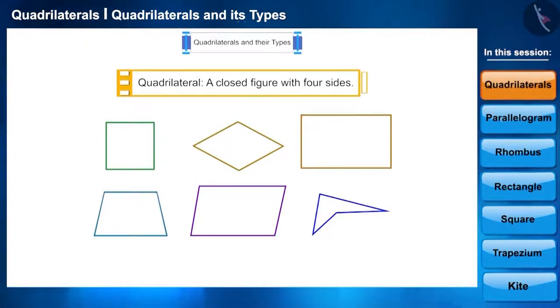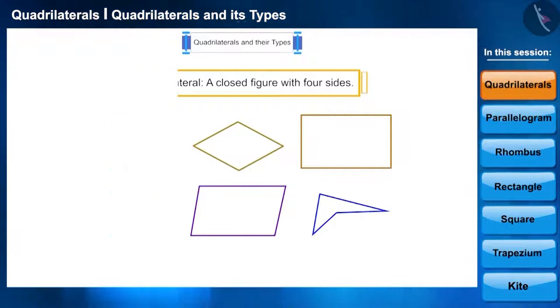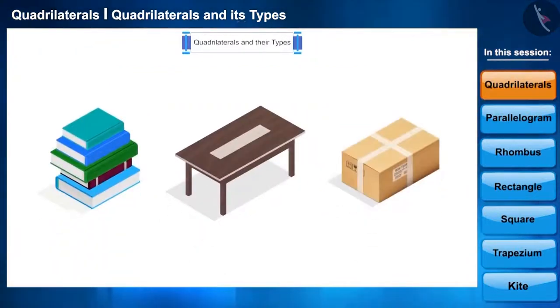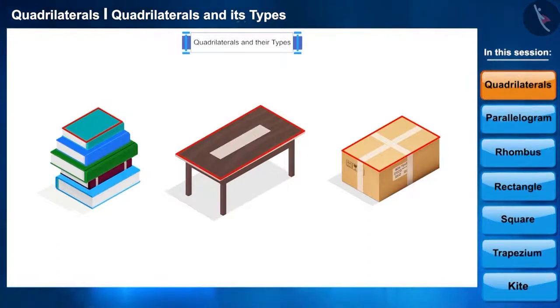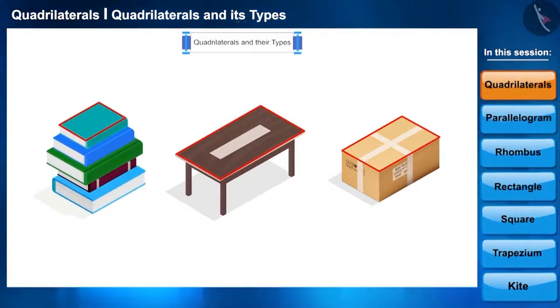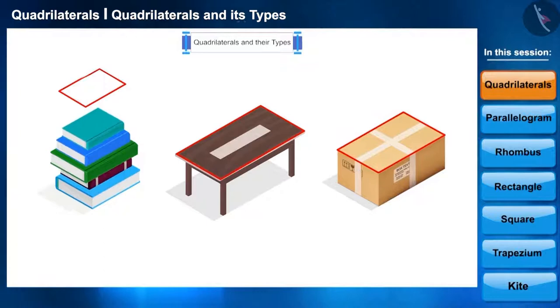We see many things around us with the shapes of quadrilaterals. For example, this part of the book - we can see its boundaries which form the shape of a quadrilateral. Similarly, the boundary of each surface of this box.